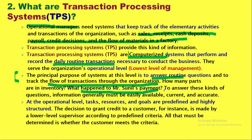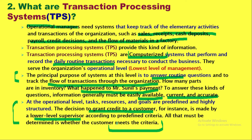In banking, for example, you can check whether cheque number 0112 was cleared on a particular date through the bank's transaction processing system. To answer all questions at the operational level, the information must be easily available, current, and accurate. At the operational level, all tasks, resources, and goals are predefined and highly structured because they are repetitive in nature and occur every day. For instance, when a customer applies for credit, a lower-level supervisor can easily check predefined criteria to decide.